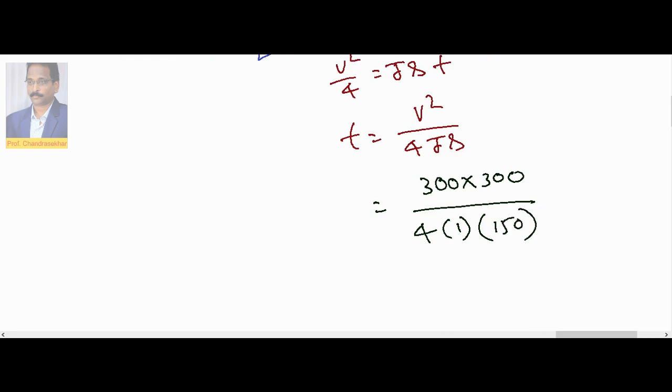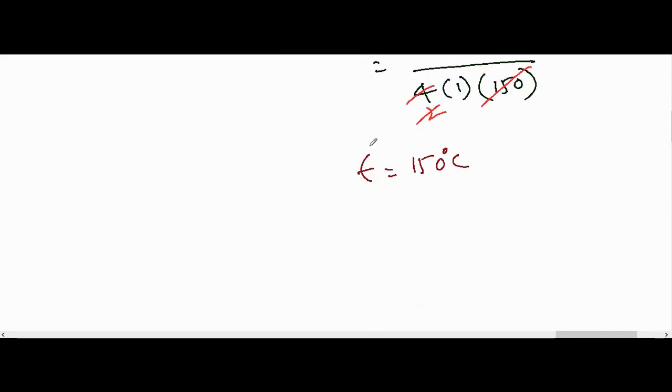So here this 150, 2 times 2, 2's with 2, it is 150. That means T is equal to now 150 degree centigrade. The rise in temperature is 150.